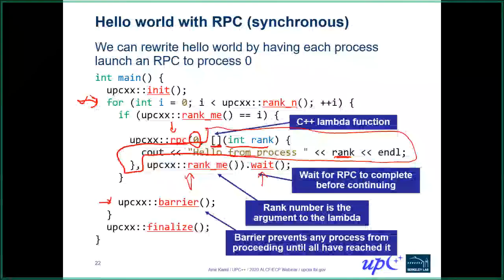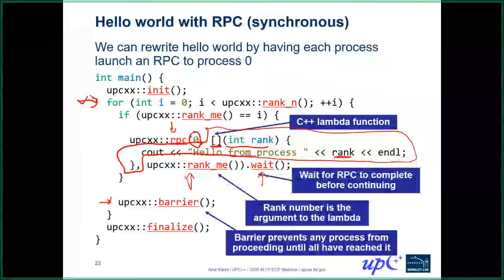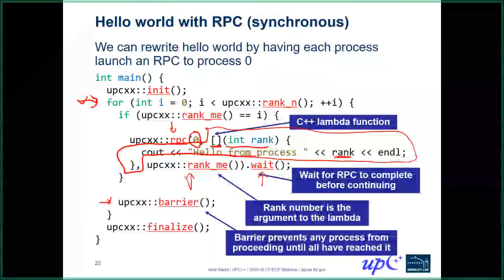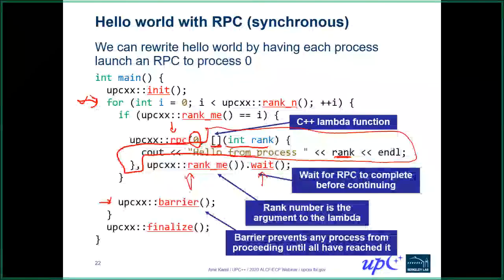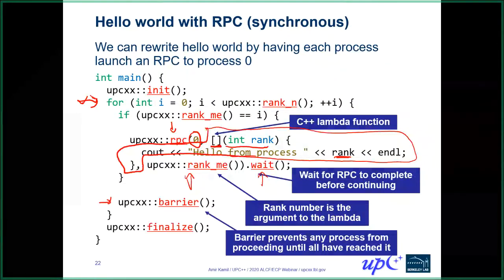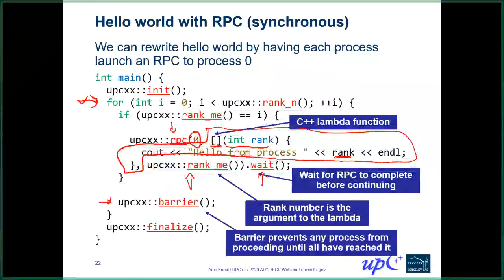On whether MPI communicators can be exposed: in UPC++, the abstraction similar to a communicator is a team. The operations here are on the world team, including everybody. We do have support for subset teams similar to MPI communicators, and you can get rank numbers with respect to those smaller teams as well.